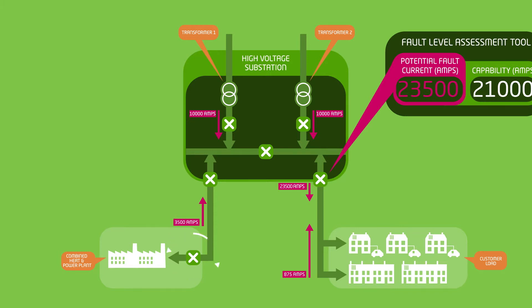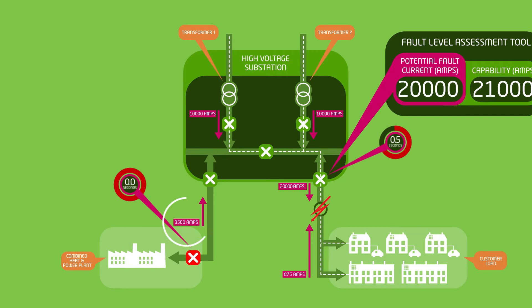But if the installed circuit breaker was managed by Electricity Northwest via a commercial agreement with the customer, we could set it to trip after the fault, as we did with transformer one in the previous example. Removing the fault current from the CHP and enabling the existing high voltage circuit breaker to operate within its capability.